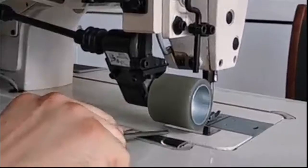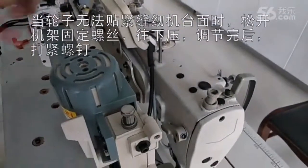When the puller cannot touch the throw-in plate, loosen the screw and press down the puller.